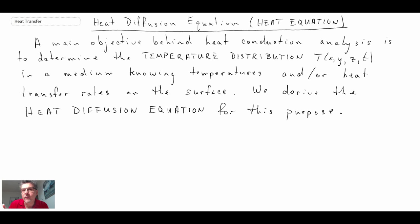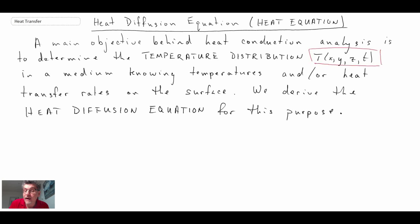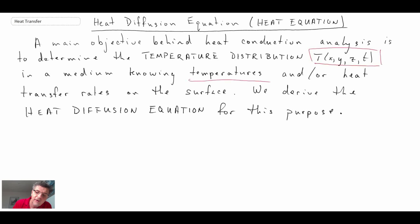One of the main things we're after is to know the temperature distribution within an object. Notice that the temperature distribution is a function of the three spatial dimensions and time. We will be looking later in the course at transient analysis, where you have temperature within the object changing with time as well as with spatial location. We'll derive the heat diffusion equation in the most general sense, but to calculate the temperature, we need to know the surface conditions — either temperatures and/or heat transfer rates, which are the boundary conditions.